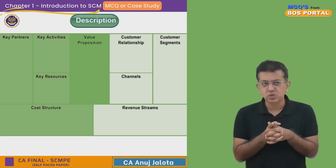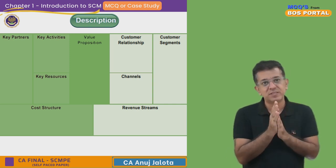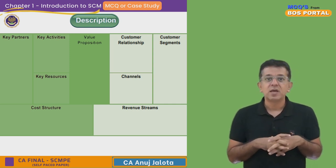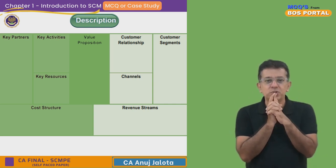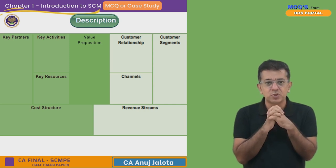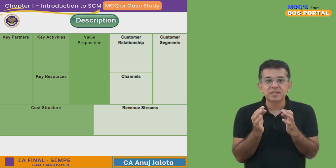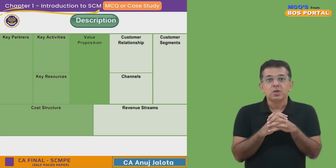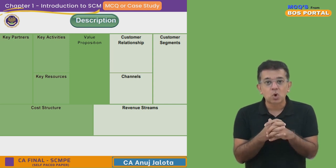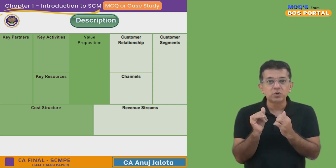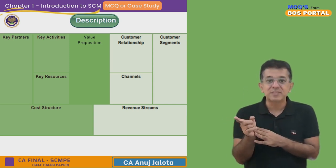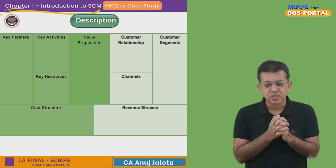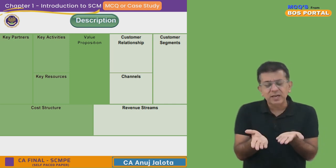You also have key resources, cost structure, and key partners on the left-hand side. On the right-hand side, you have customer relationships, customer segments, channels, and revenue streams. In the middle, you have something called value proposition. Value proposition is key — every business is basically there to cater to the needs of the consumers. That is super important: you have to cater to the needs of the consumer.